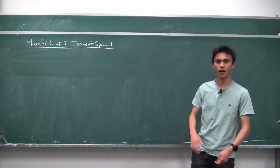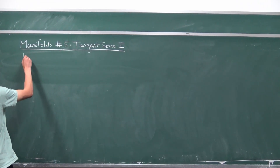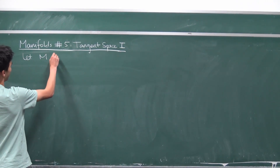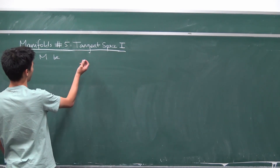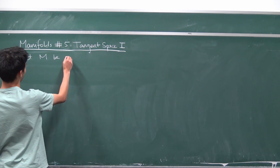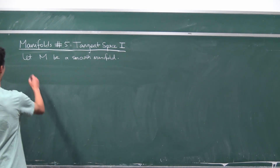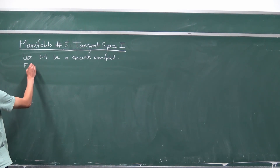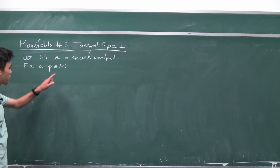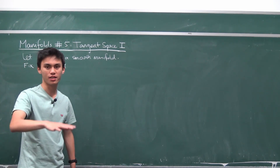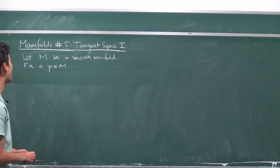Roughly what we're going to define: first of all, a manifold. We need to let M be a smooth manifold, and we know what a smooth manifold means — it means it comes with a topology and a smooth atlas and so on. And what we want to do with this manifold is we want to fix a point P, and define the tangent vector space at the point P in our manifold.